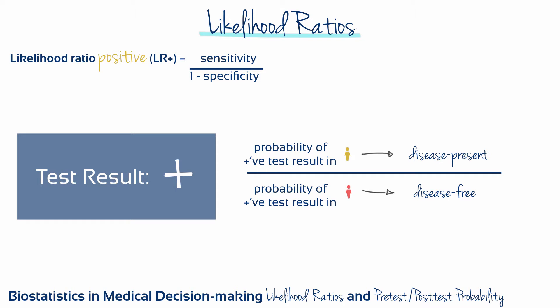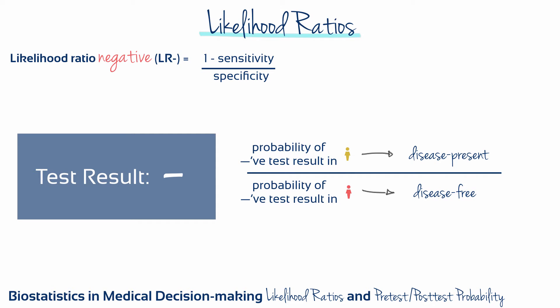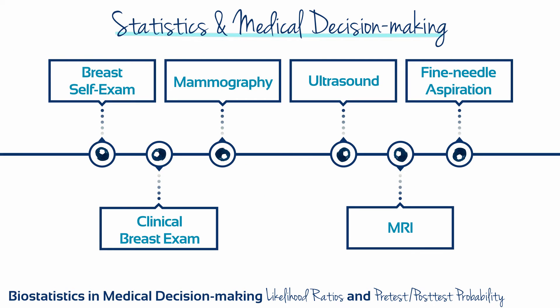The negative likelihood ratio is the probability of obtaining a negative test result in a patient with the disease of interest divided by the probability of a negative test result for a person without the disease — in other words, the probability ratio of getting a false negative versus getting a true negative. Different tests have different likelihood ratios because they have different sensitivities and specificities.